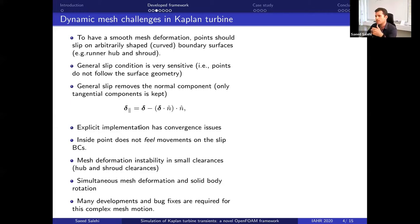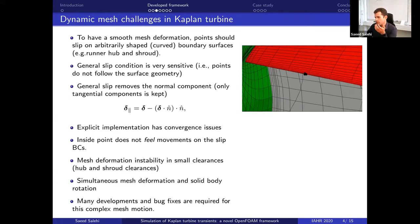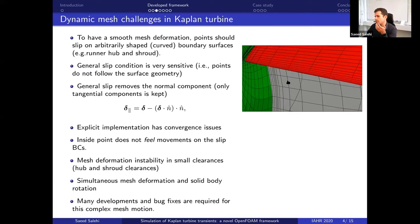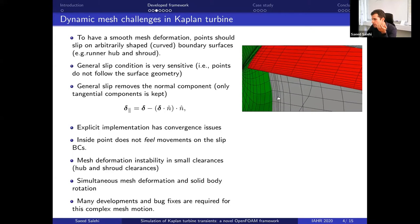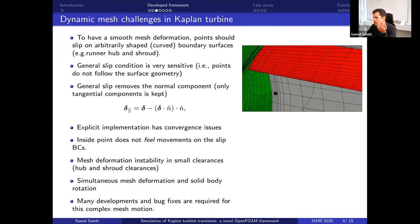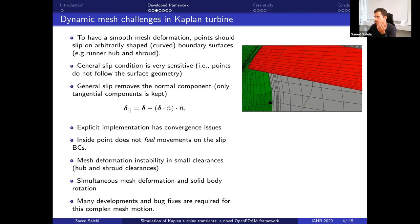Since it's an explicit implementation, it does not contribute to the coefficient matrix. This causes a big problem: the points inside the domain are not aware of this slipping — they cannot feel this boundary. In a deformation in a Kaplan turbine, the points get closer and closer to the shroud, finally hit it, we get negative volume, and the simulation is destroyed.